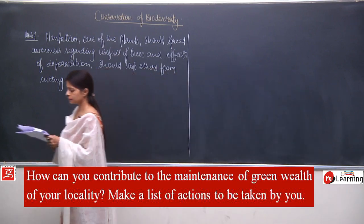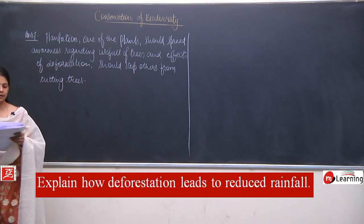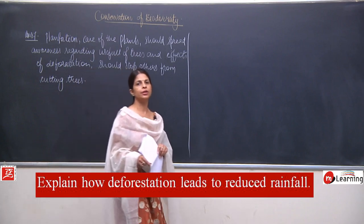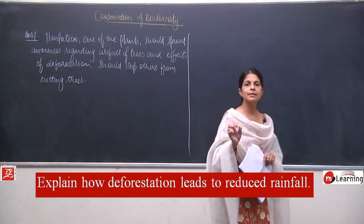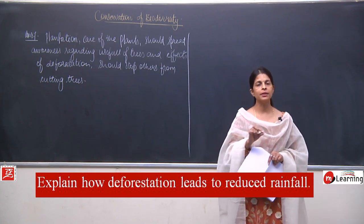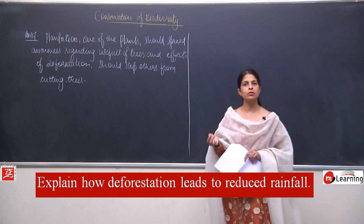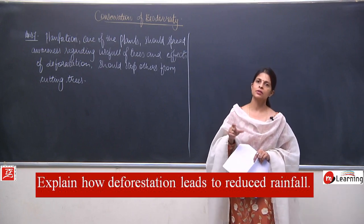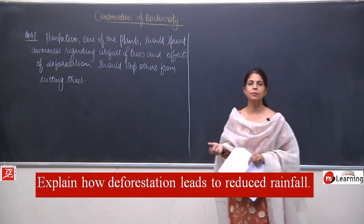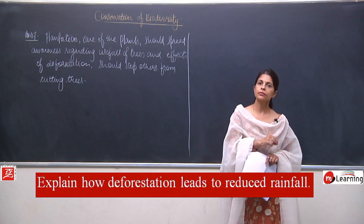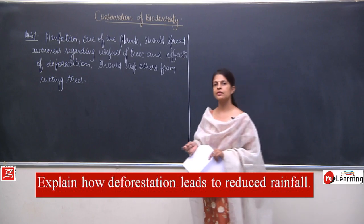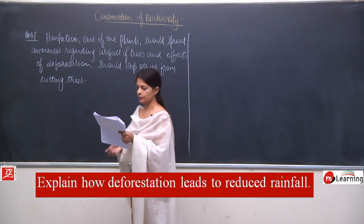Question number eight: explain how deforestation leads to reduced rainfall. If trees are not there, carbon dioxide will increase, temperature will increase, the water cycle will be disturbed, and the transpiration rate will also be very low. All these factors will influence the water cycle.